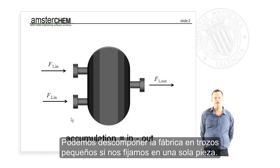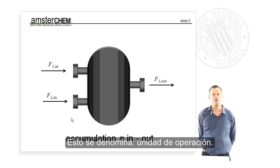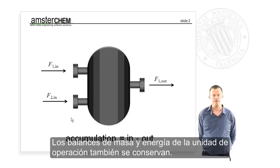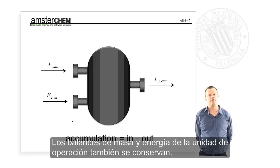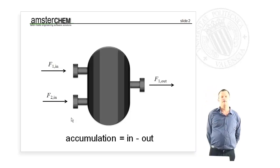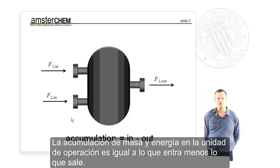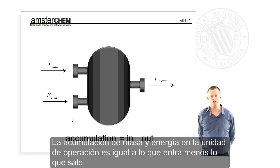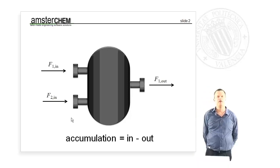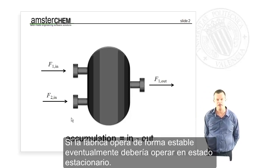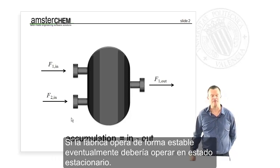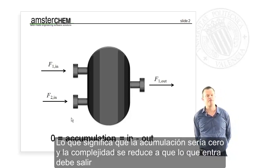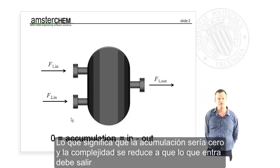We can break down the factory into smaller pieces. If we look at one single piece of equipment, this is called a unit operation, and the mass and energy balance around the unit operation are also conserved. The accumulation of mass and energy in such a unit operation equals what goes in minus what comes out. If the factory is operating steadily, it will reach steady state, which means accumulation becomes zero, and the complexity is reduced to: what goes in must come out.